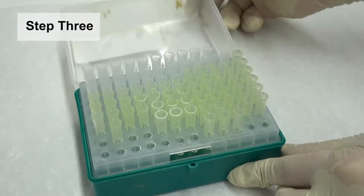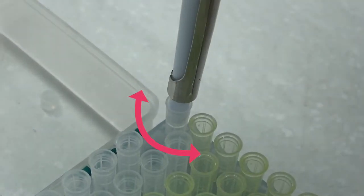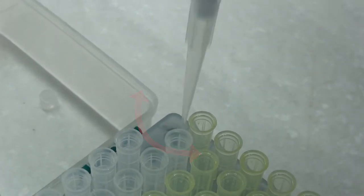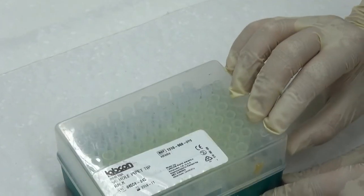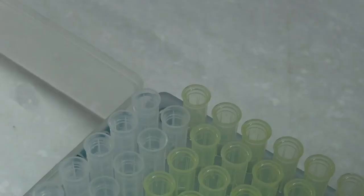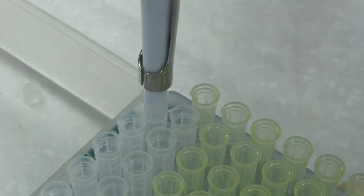Step 3: Open the lid of the tip box. Fit a tip to the end of the shaft with a slight twist to ensure a good seal. Close the lid of the tip box to prevent dust and contamination. Note, jamming tip into pipette is a bad habit.